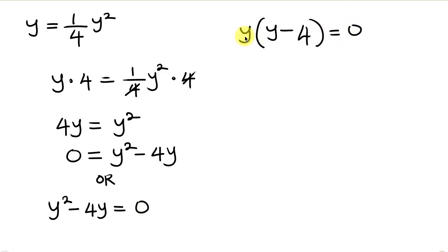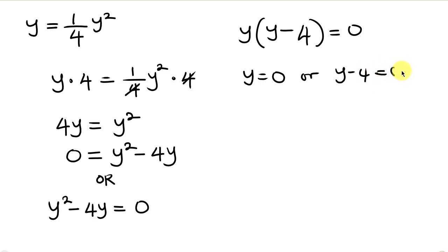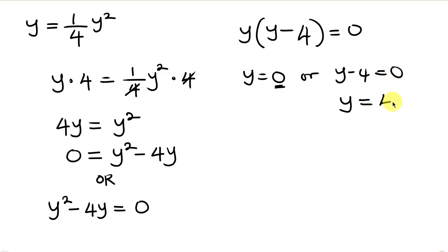We see that y times (y minus 4) equals 0, so either y equals 0 or y minus 4 equals 0. For the second case, moving negative 4 to the right gives y equals 4.